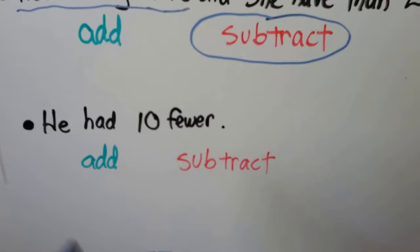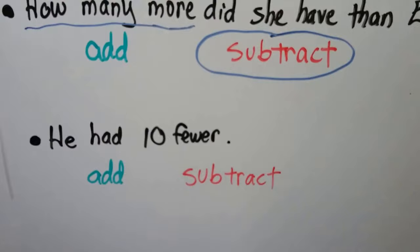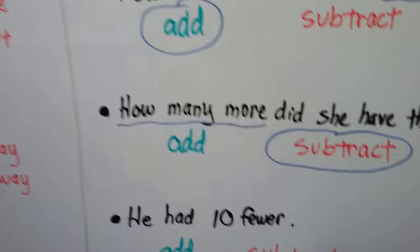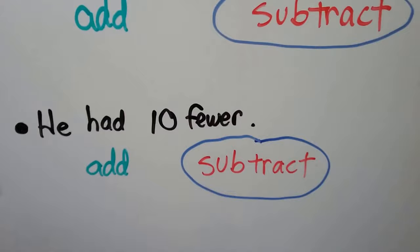How about this one: 'He had ten fewer.' If you saw 'he had ten fewer' in a word problem, do you think you would add or subtract? Let's look at our clue word list. 'Fewer' is a clue word for subtraction, so we would subtract. If he had ten fewer, we would need to take away that ten — we would need to subtract that ten.